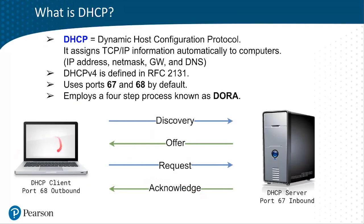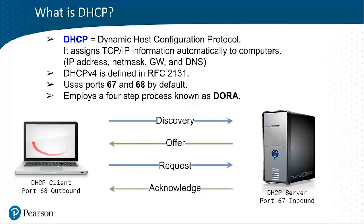The DHCP client has no IP configuration to start, and you don't want an admin configuring it statically or manually. You want to be able to just turn on the computer and have it obtain IP addresses and other information automatically from a DHCP server. That's how most DHCP clients are configured by default — whether you buy Windows 11 or have a Linux Debian client, it'll be set to obtain an IP address automatically.